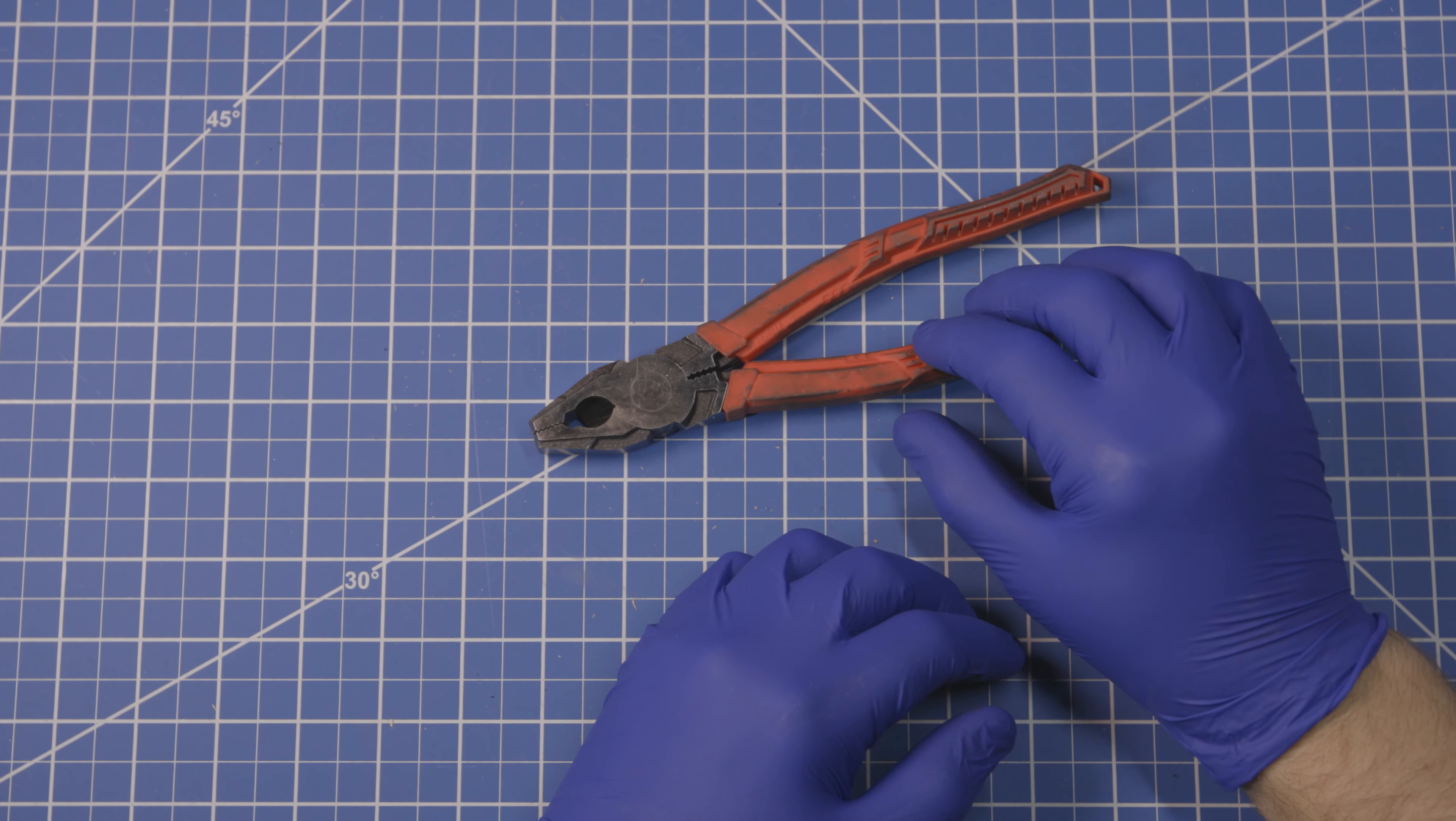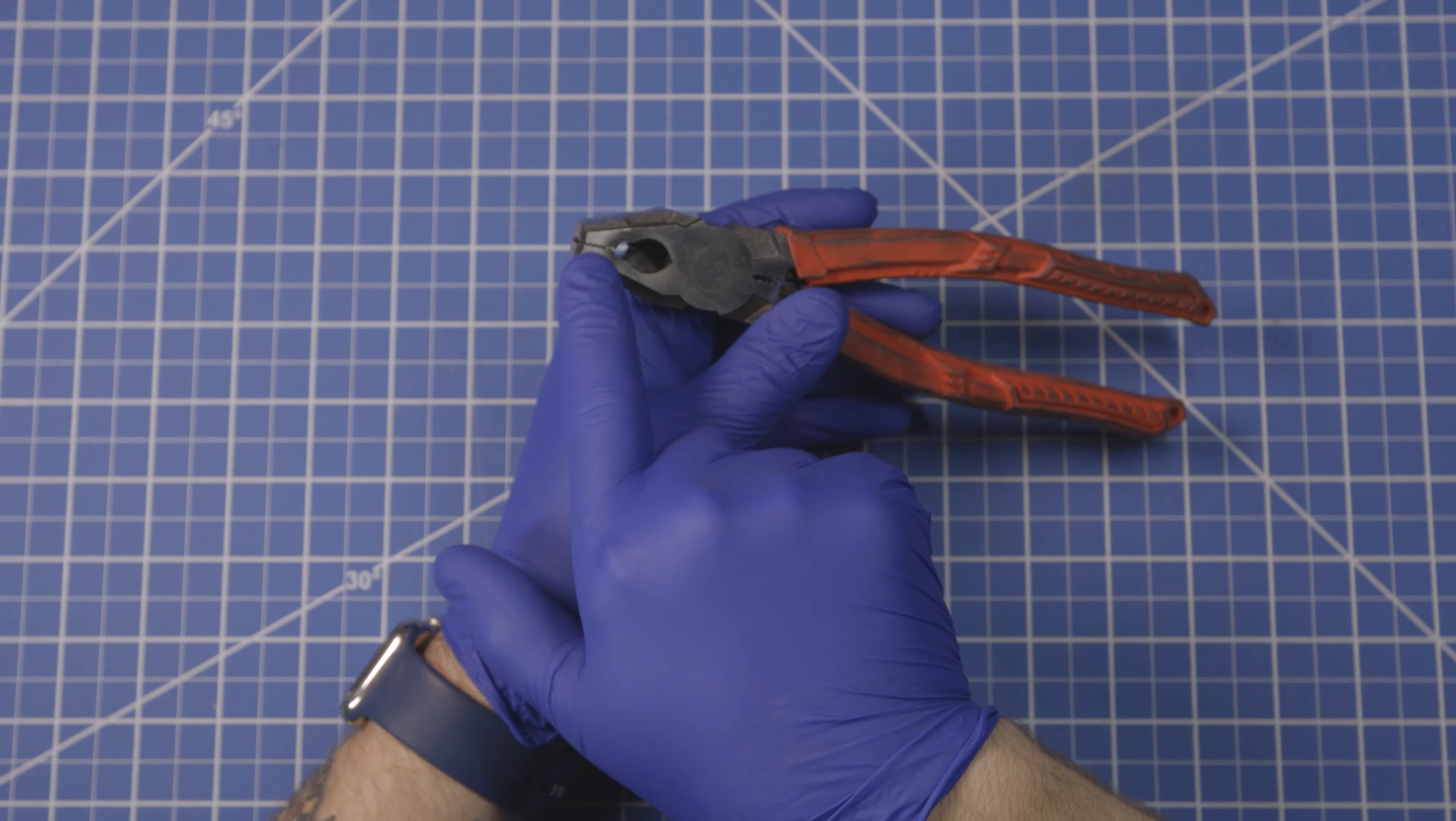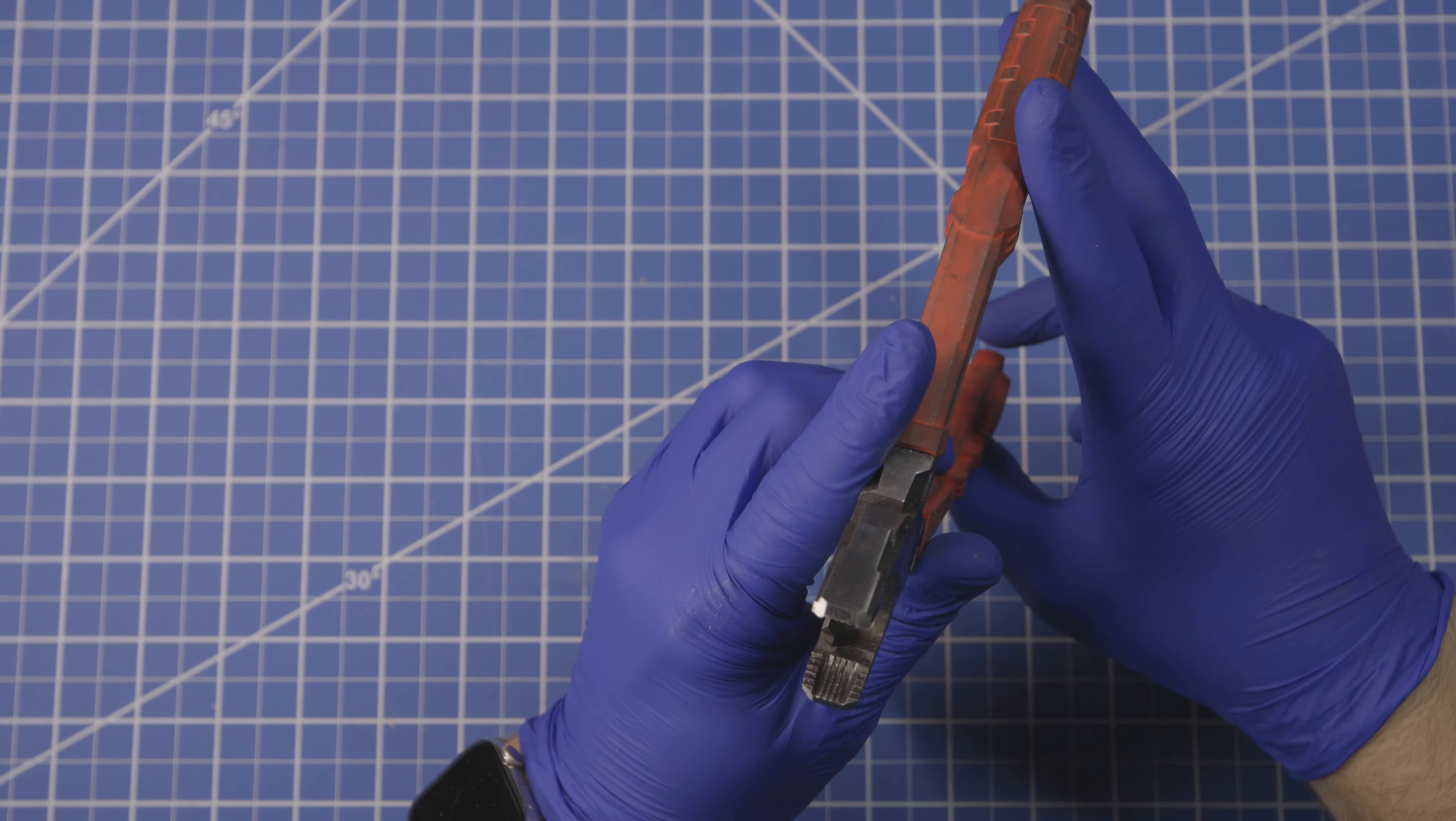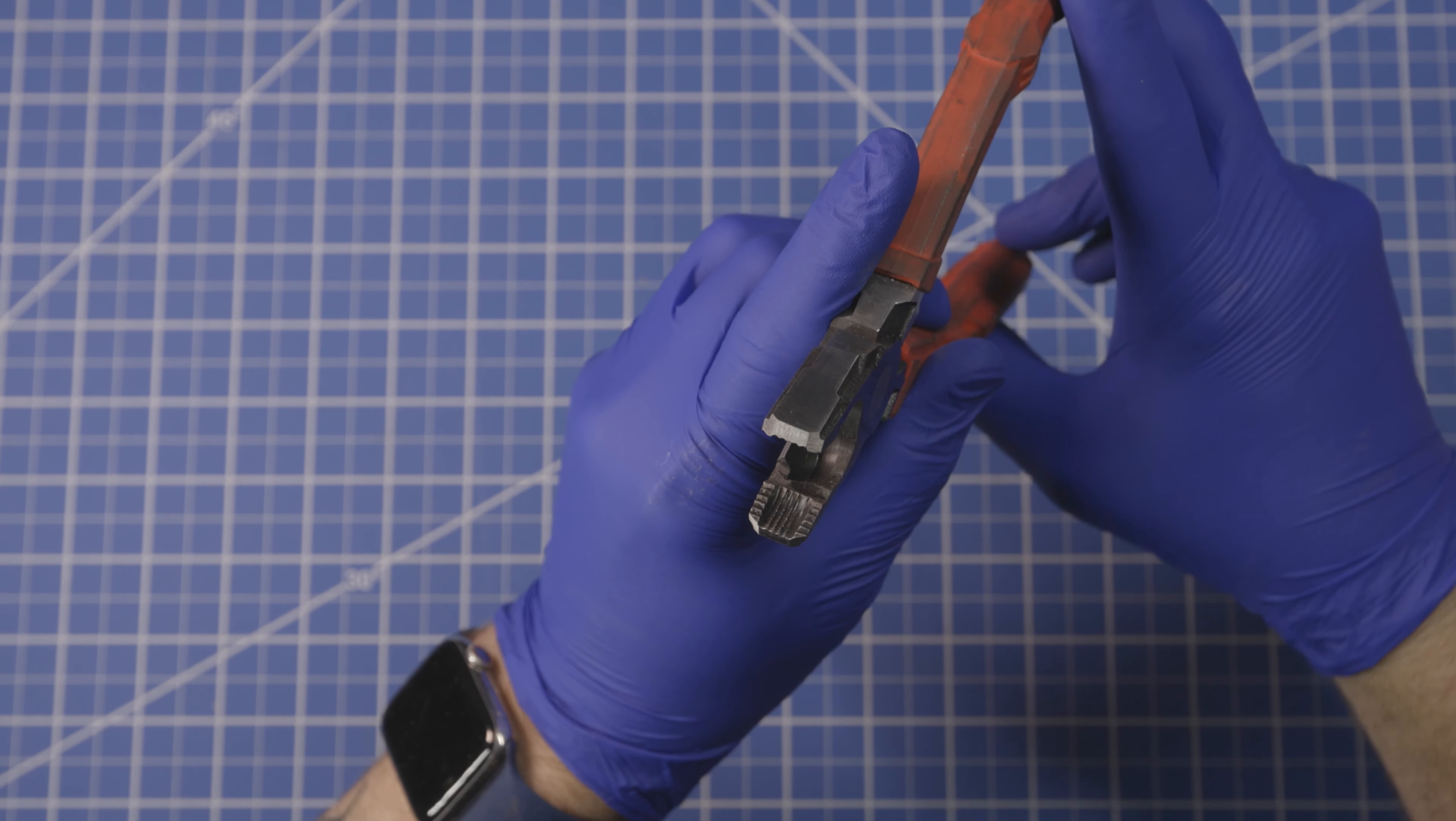But these are specifically designed to extract screws or other fasteners that are damaged. The way they do that is, unlike standard pliers which have grooves that run all the way across the face of the gripping part of the jaws, these instead have grooves that are oriented towards the tip of the pliers, which is unusual.